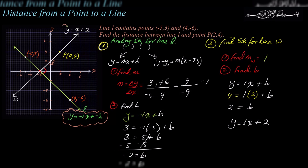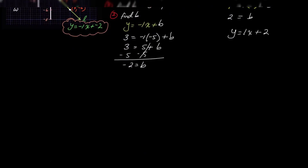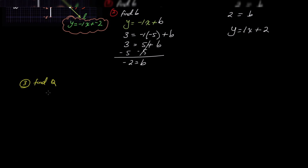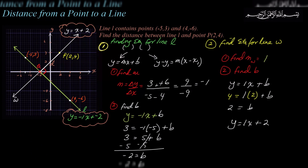Now I have the equations of both lines: line L is y equals negative x minus 2, and line W is y equals x plus 2. I need to figure out point Q, the intersection of these two lines. Step 3 is find the intersection, which is point Q. I write down both equations and solve the system.